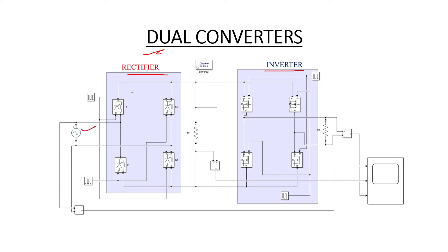Now we'll see how it's working. First, we are feeding AC to the rectifier. We know if you feed AC to a rectifier it converts AC to DC, so at the resistor output the voltage will be pulsating DC. This is a controlled rectifier. Then this DC is fed to the inverter which converts DC to AC, so we call it an AC to DC to AC conversion.